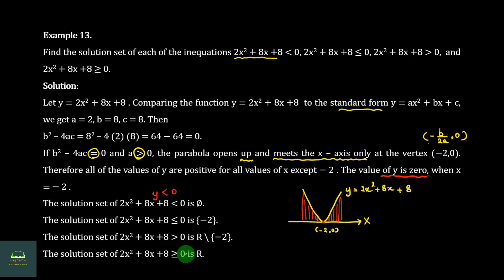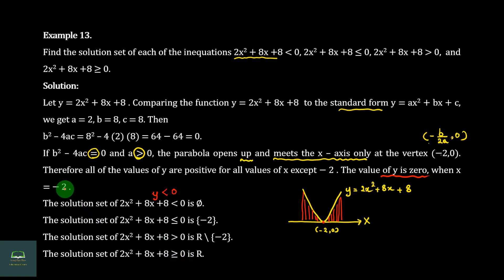When y is equal to zero, y is equal to zero, and y is equal to zero at x, and x is equal to zero. So we have to know that the solution set will be given to zero. And we can see that the solution set will be given to zero.